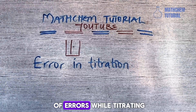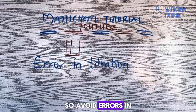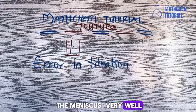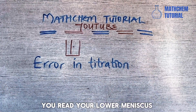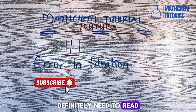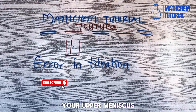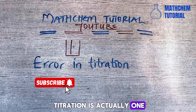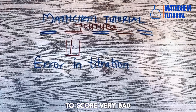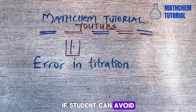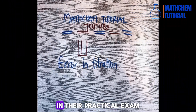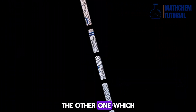Students make a lot of errors while titrating, so avoid errors in titration. When you are titrating, you need to read the meniscus scores very well — read your lower meniscus, and if you are doing a burette titration, you need to read your upper meniscus. Error in titration is one of the key factors that makes students score very badly in their chemistry practical, so if students can avoid errors in their titration, they will get a very good score.